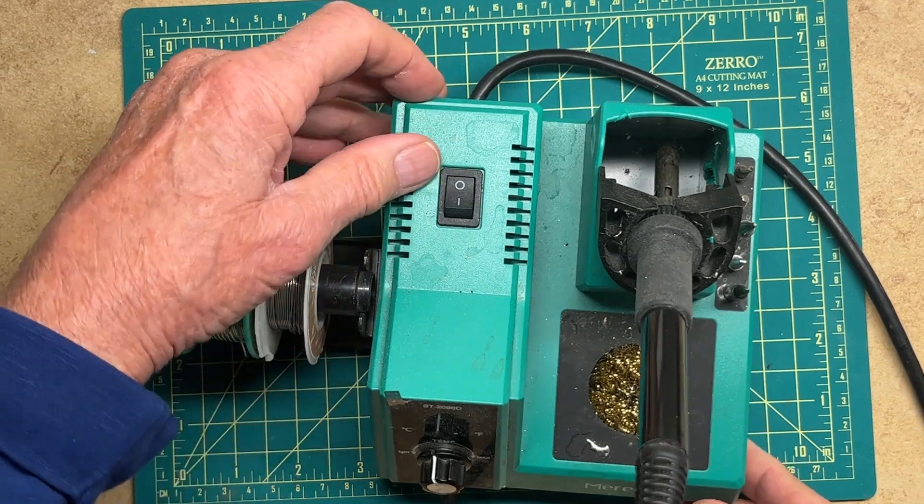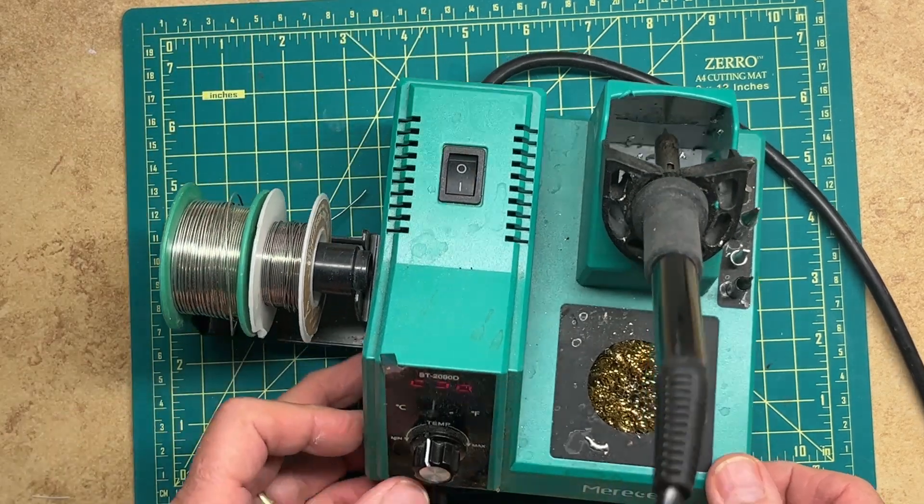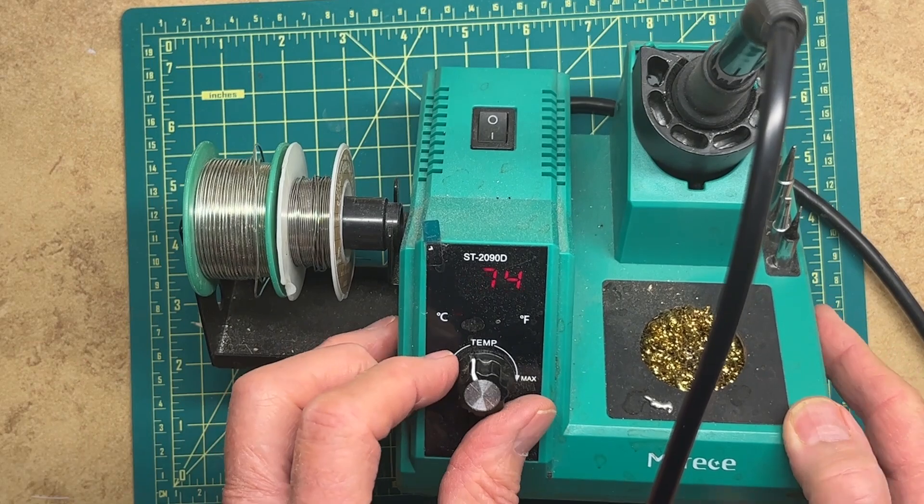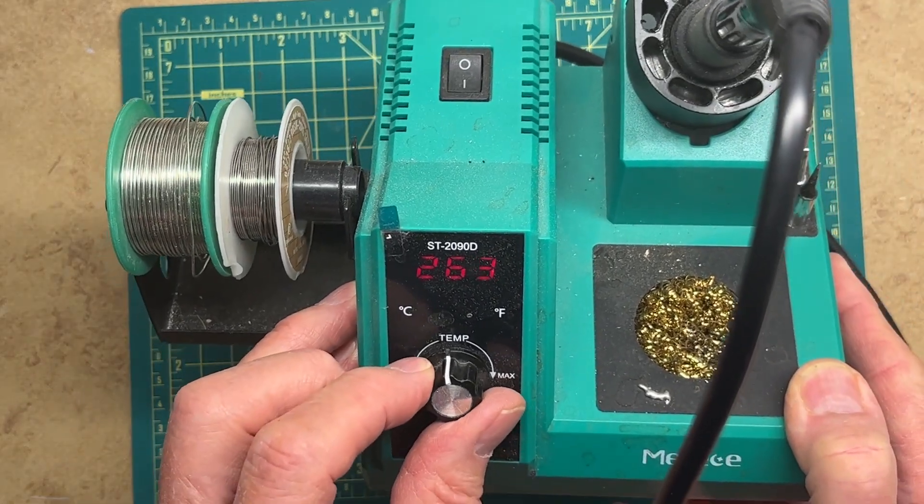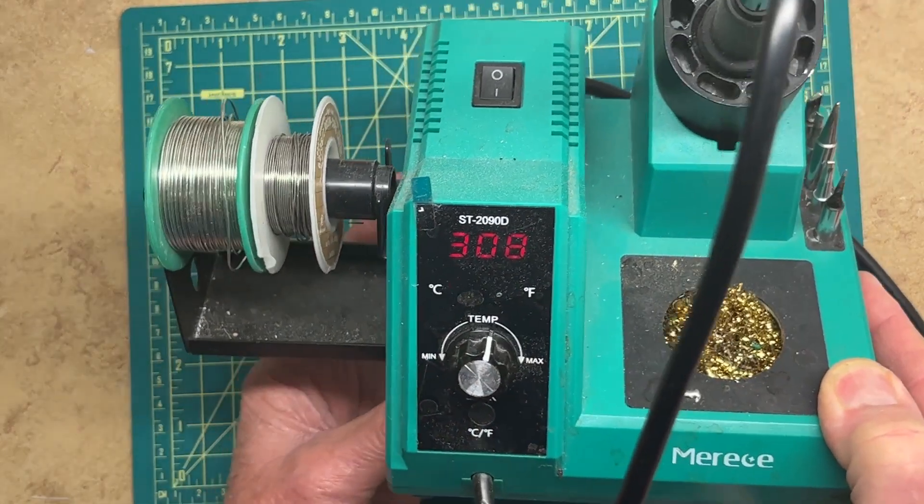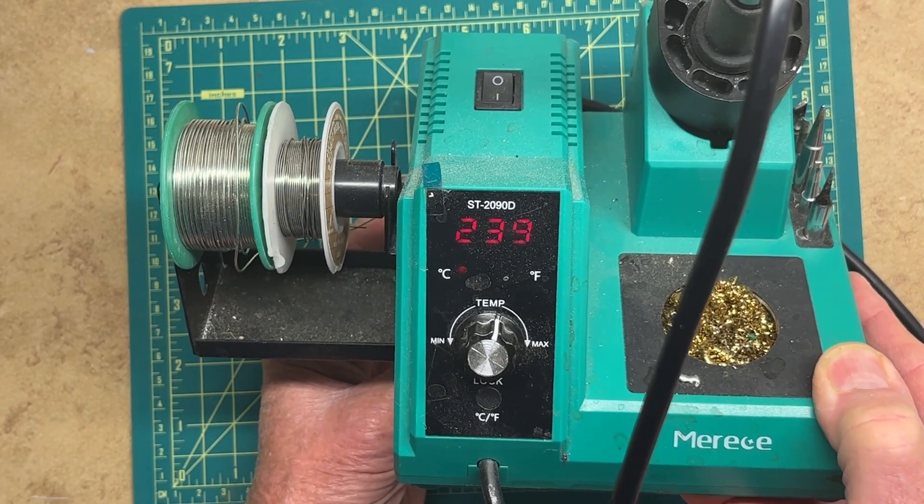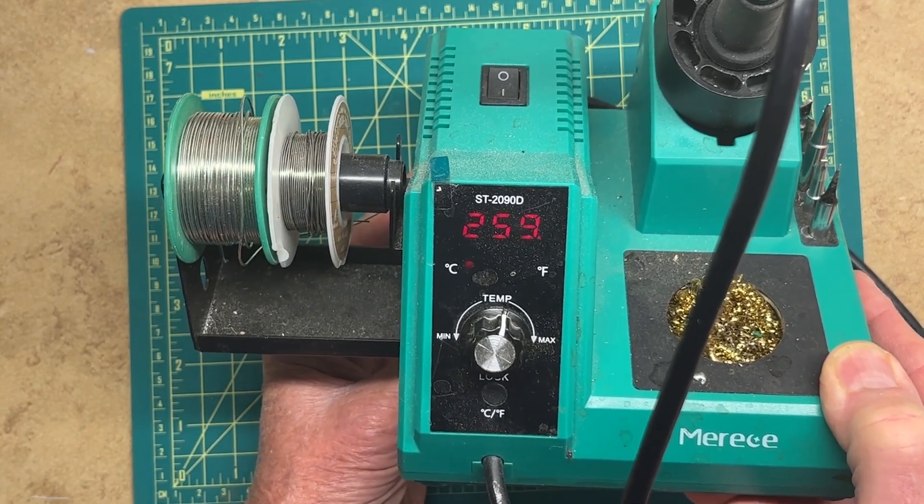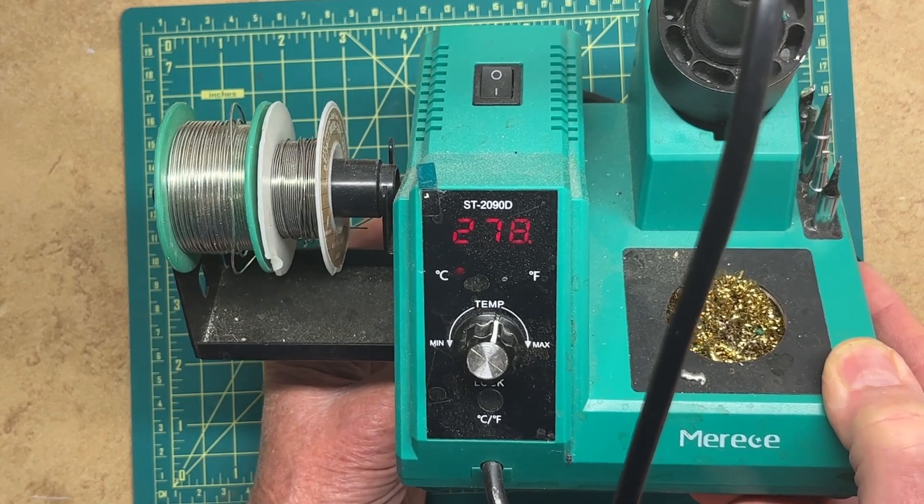So you plug this in the wall, turn it on, and you can set the temperature. I usually set it for about 300 or 310. If you wait a few moments, it goes back and measures the actual temperature. You can see it's warming up pretty quickly.